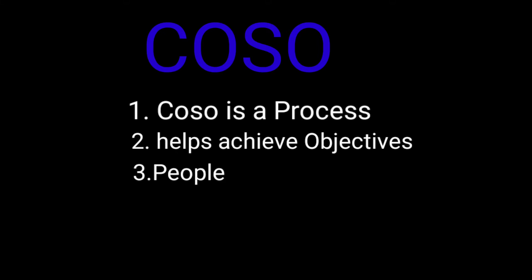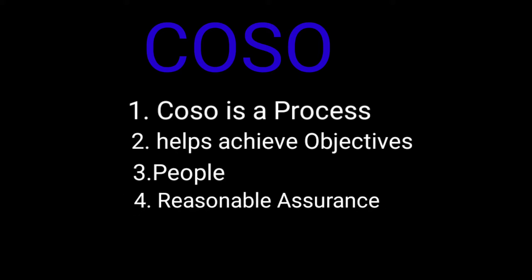Number three, it is the people of the organization who put them into effect. Number four, they can provide only reasonable assurance but not absolute assurance to senior management and the board regarding effectiveness and efficiency of operations, reliability of reporting, and compliance with applicable laws and regulations. Number five, these concepts can be adapted to the entity's structure — they can be applied entity-wide or to one or more subsidiaries, divisions, operating units, or business processes.